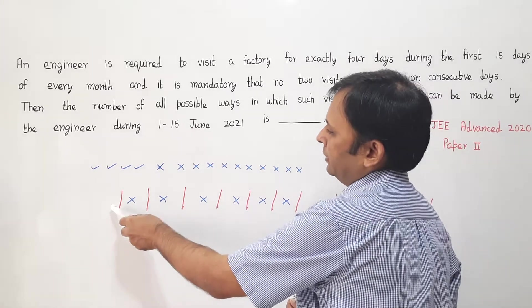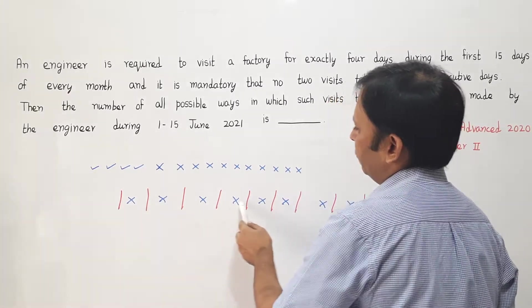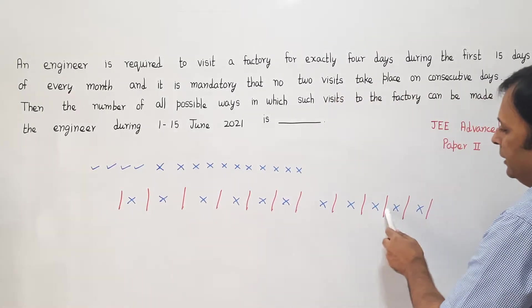So how many places do I get to put a tick? I can place a tick here: 1, 2, 3, 4, 5, 6, 7, 8, 9, 10, 11, and 12. These are the 12 places I can place a tick.